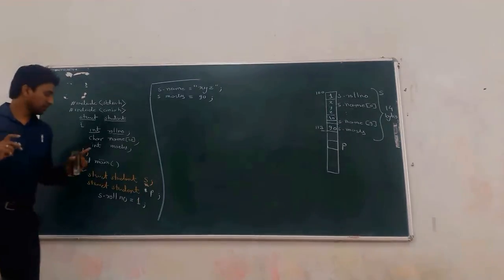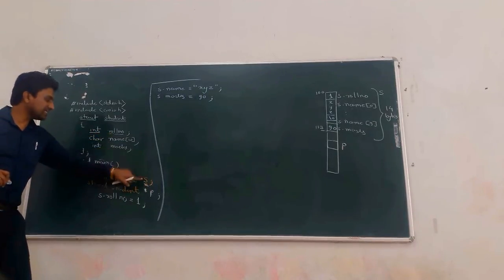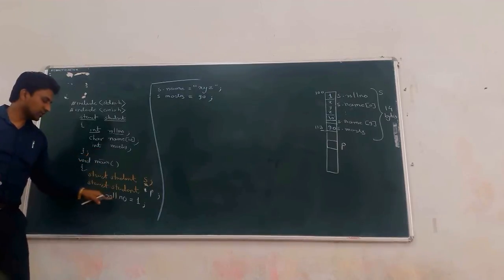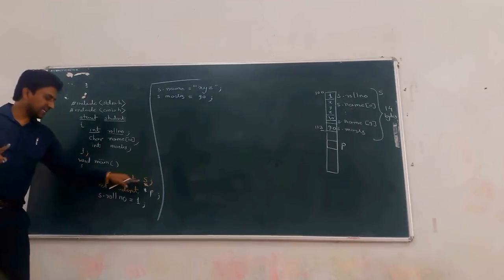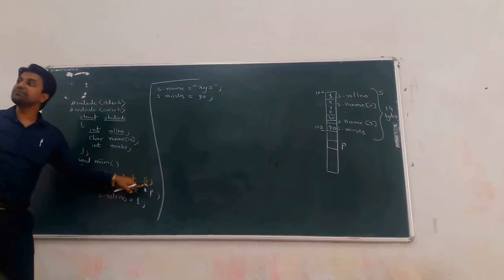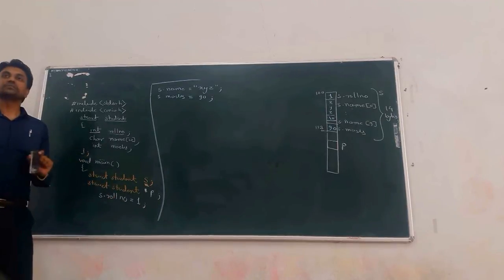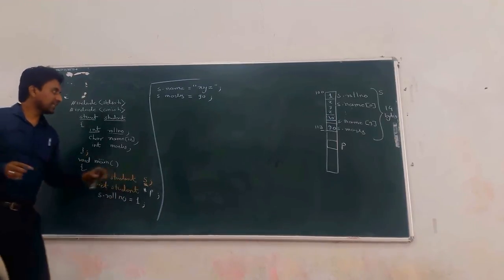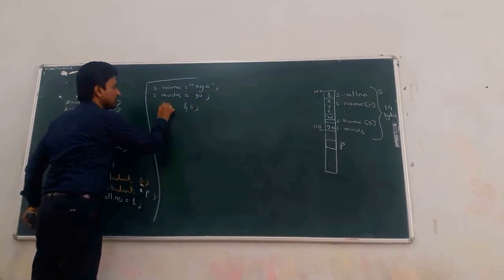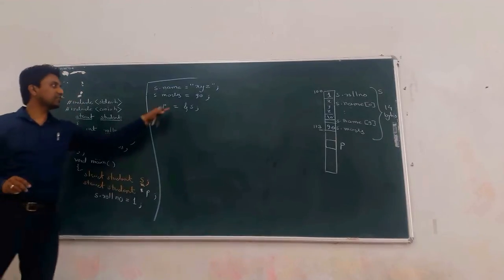Remember: when accessing structure's data members using a structure's simple value variable, use the dot operator. Now we assign the address of S — the value variable — to P. Write the statement: P = &S. P now contains the address of S, meaning P points to the value variable S.